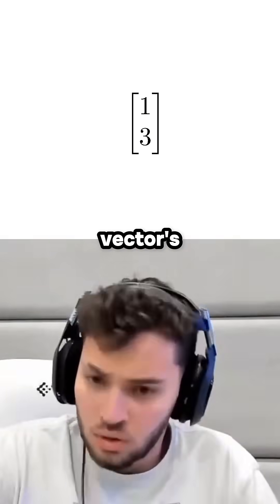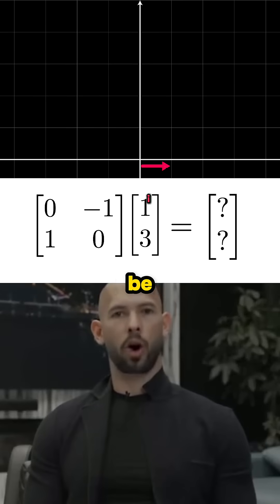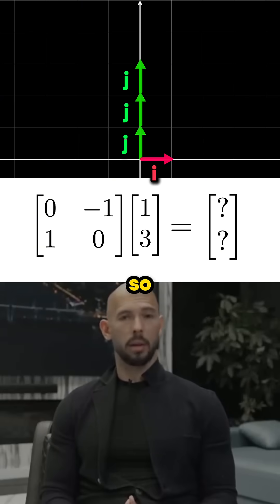Wait, hold up, that's not a vector. A vector's like something times i plus something times j. It's just another way of writing vectors, bruv. This one would be 1i plus 3j. So as an arrow, it'd look like this.